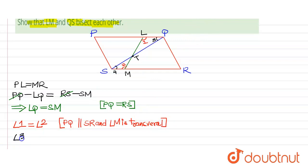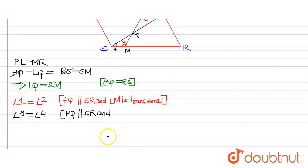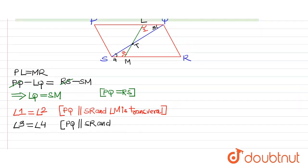Similarly, we can say angle 3 is equal to angle 4. PQ is parallel to SR and here SQ is transversal.